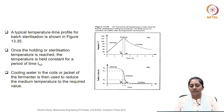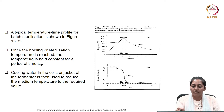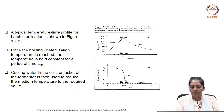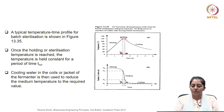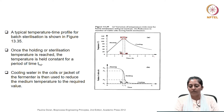What you see on the slide is a typical temperature-time profile for batch sterilization operation. Once the holding or the sterilization temperature is reached, the temperature is held constant for a period of time shown here as T_HD. The cooling water in the coils or the jacket of the fermenter is then used to bring the temperature of the medium back to the required temperature. In the plot below showing number of viable cells versus time, there is a reduction in the number of cells happening in all three phases: during the heating, the holding, and also during cooling.